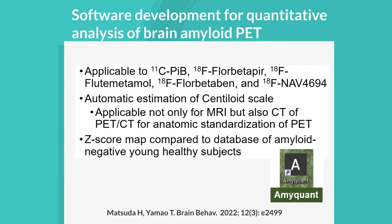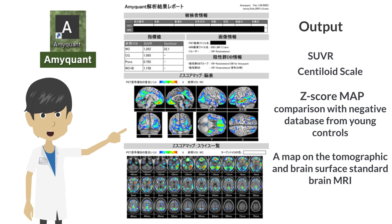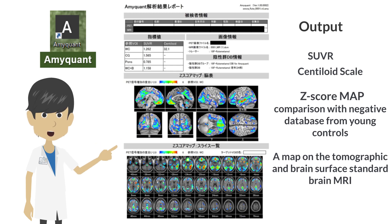To calculate the centiloid scale of amyloid PET, one must run statistical parametric mapping on MATLAB and perform extensive processing. Several software packages have been published to perform this accurately and effortlessly. Here we present Amarant, software compatible with the five currently used amyloid PET tracers. It automatically calculates the centiloid scale, performs anatomic standardization using MRI or CT from PET-CT, and displays a Z-score map compared to a database of amyloid-negative young healthy subjects.